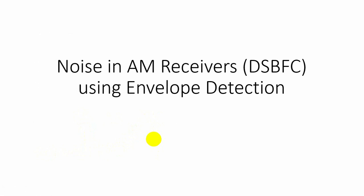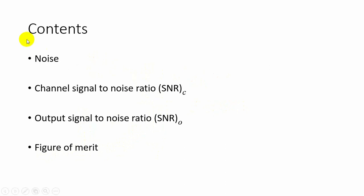In this video we are going to discuss about noise in AM receivers using envelope detection. The contents include an introduction to noise, how to find the channel signal to noise ratio, the output signal to noise ratio, and the figure of merit.